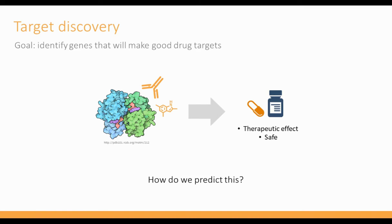We'll start at the earliest stages of the pipeline: target discovery. The goal is to identify proteins that, when modulated through a molecule such as an antibody or a small molecule, will produce a therapeutic effect for the disease and also be safe for human use. Getting to the stage where we actually have a molecule and can test it is very time-consuming and expensive. Our goal in target discovery is to narrow down the field of targets as much as possible — zeroing in on those most likely to be successful — so we can focus our resources and hopefully get to a medicine more quickly.